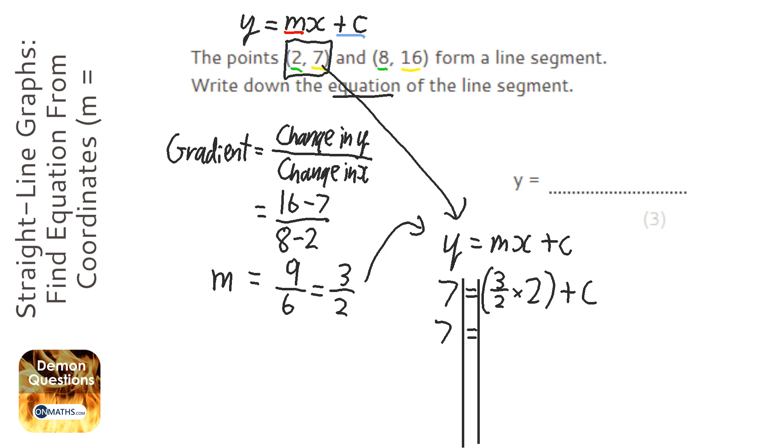So the first thing to do is 1 and a half times 2, and that's just going to be 3 plus c. And we're going to take away 3 from both sides to get c on its own. So 4 equals c, or c equals 4.